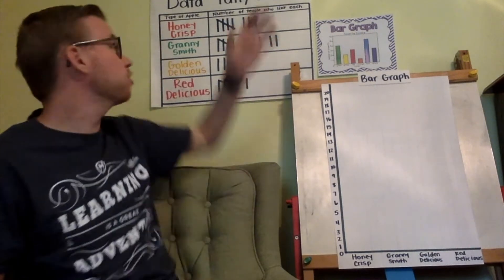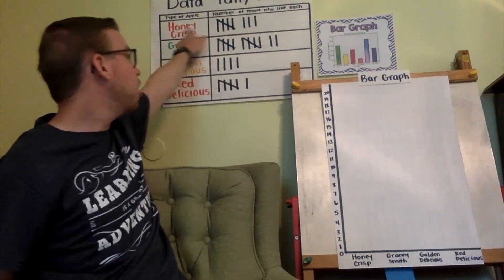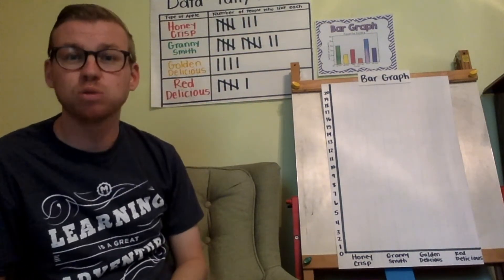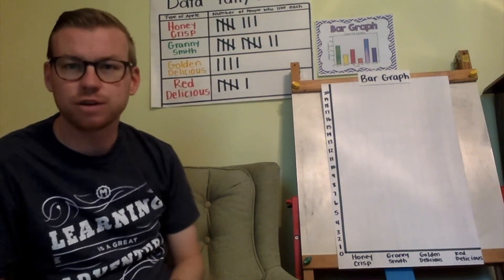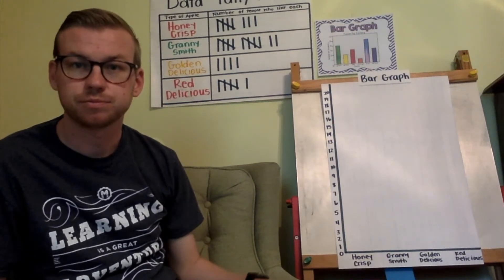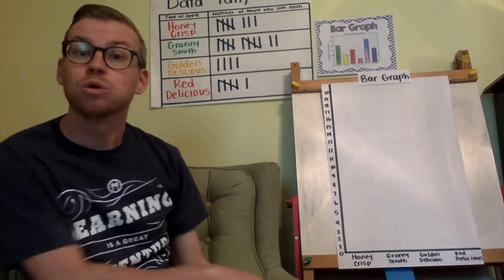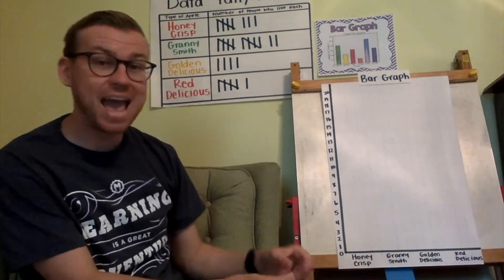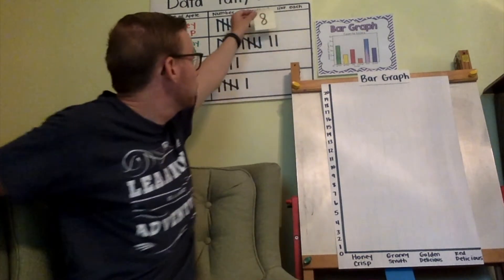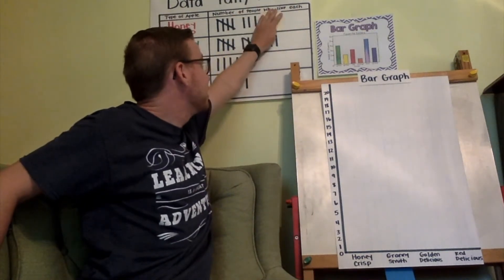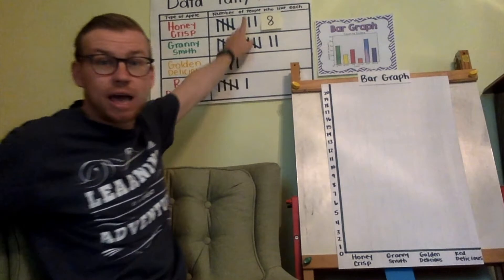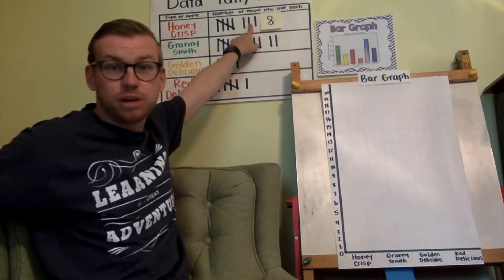Let's look at the first column: Honeycrisp. How many people liked Honeycrisp? If you said eight people liked Honeycrisp, you're exactly right. So I'm going to put an eight up here so that we know.